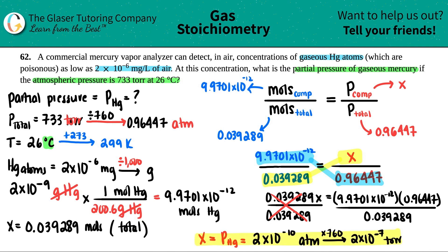Those are the two expressions for the partial pressure of mercury in atm and torr. This was a long one, but hopefully you got it. Let me know in the comments, thanks for watching, subscribe to the channel if you want to help us out, and I'll see you all later!